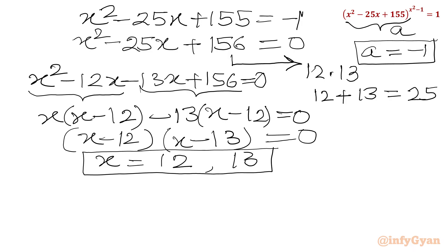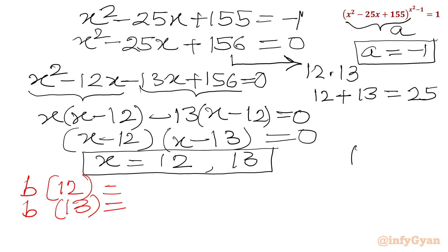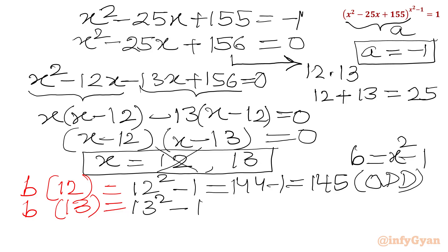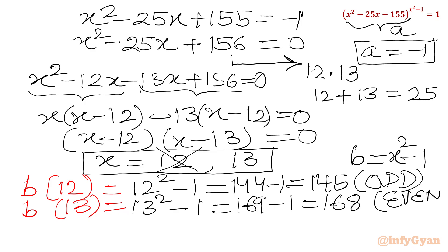Now we have to check the second condition: the exponent must be an even number. For b equal to x squared minus 1: b(12) equals 12 squared minus 1 equals 144 minus 1 equals 145, which is an odd number — so x equal to 12 is a rejected solution, as it won't generate a real result. b(13) equals 13 squared minus 1 equals 169 minus 1 equals 168, which is an even number — so x equal to 13 is accepted.